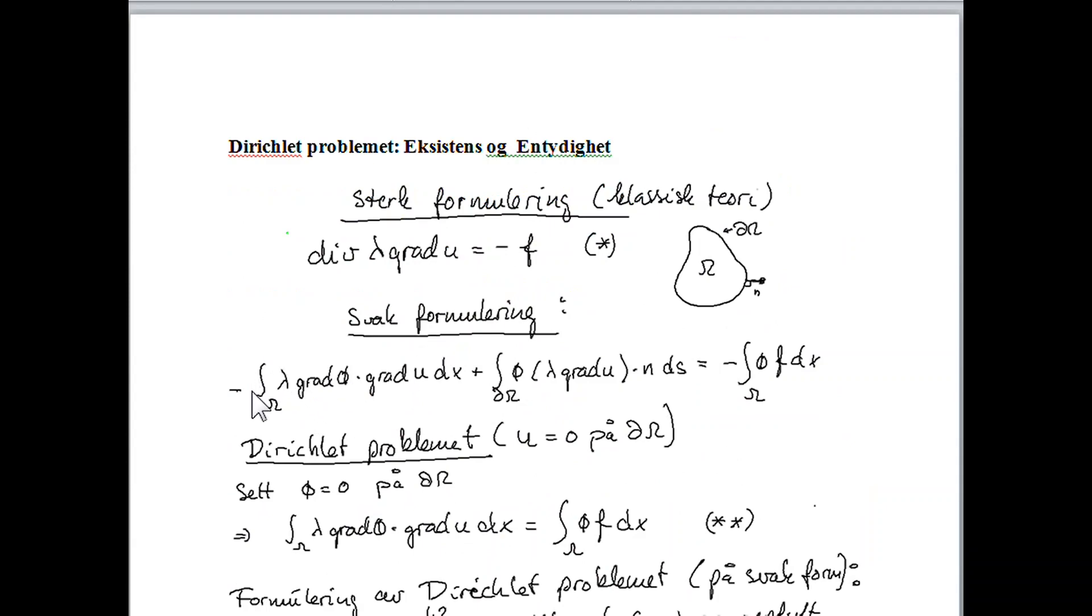Let us just repeat this, it's given by this equation. The weak formulation is generally on this form, but what's happening when we have the Dirichlet problem? That is, when we know that u is equal to zero on the boundary.